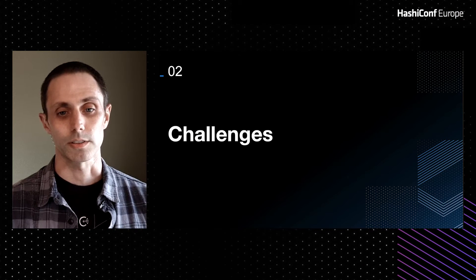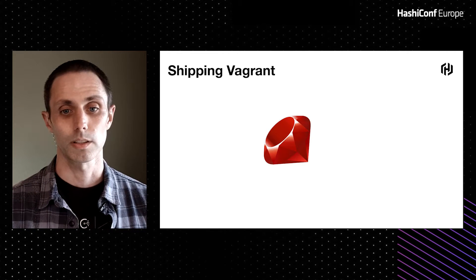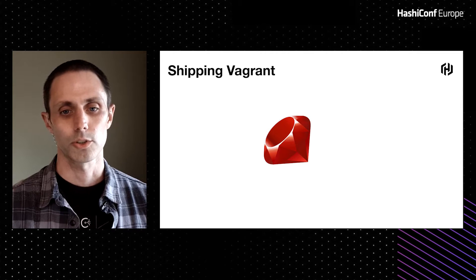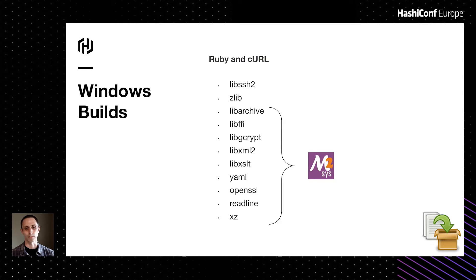However, Vagrant provides many difficult maintenance challenges. Let's take a look at how Vagrant is shipped. Vagrant is a Ruby-based application, and this alone makes it different from other HashiCorp products. Whereas the majority of other teams ship a binary, we ship an entire package — including all of Vagrant's dependencies. For POSIX-style systems, we build the Ruby interpreter and curl along with installing Vagrant, including all required dependencies.